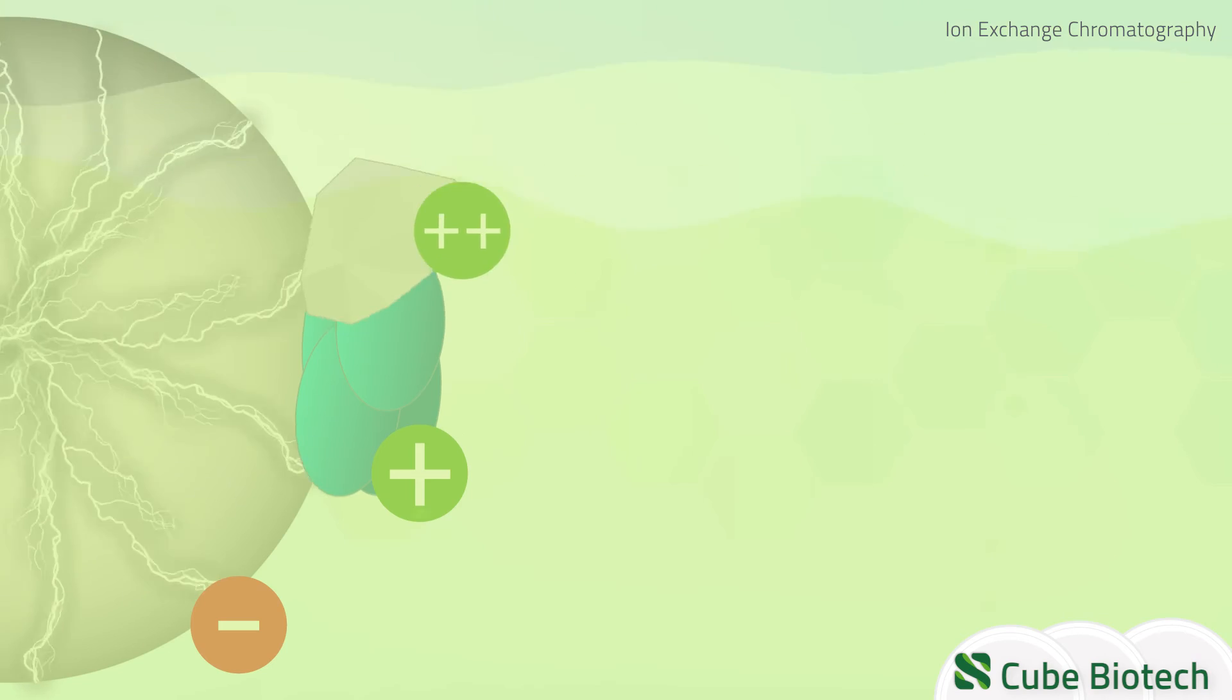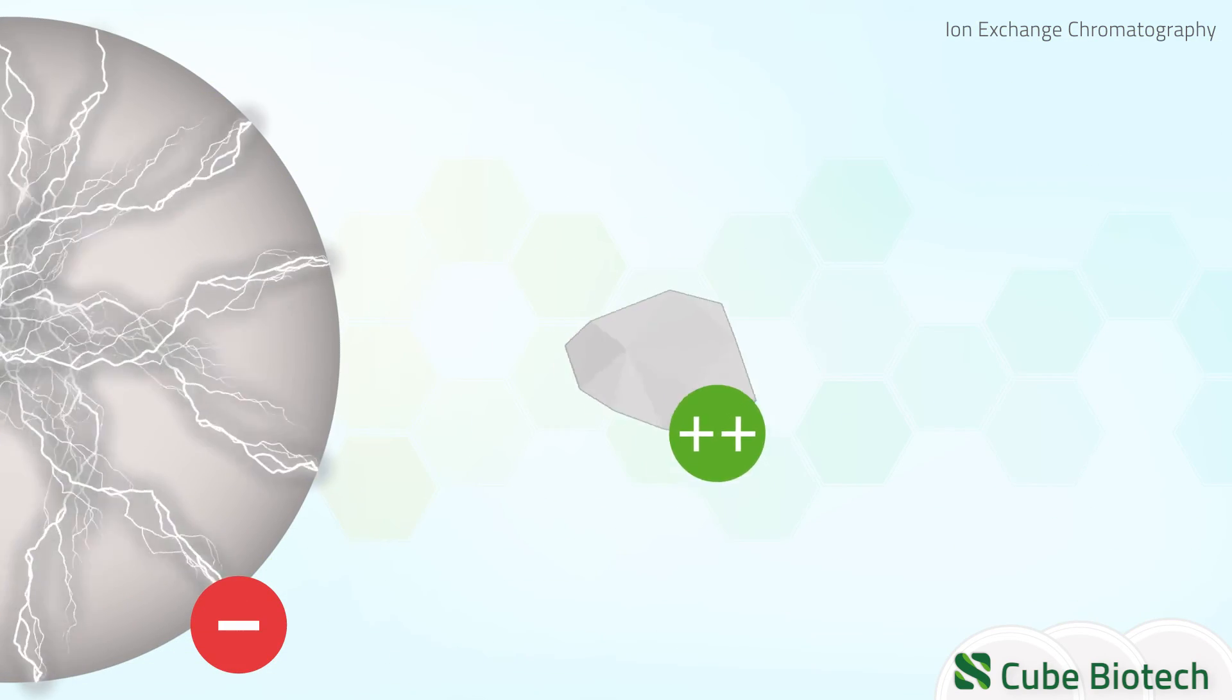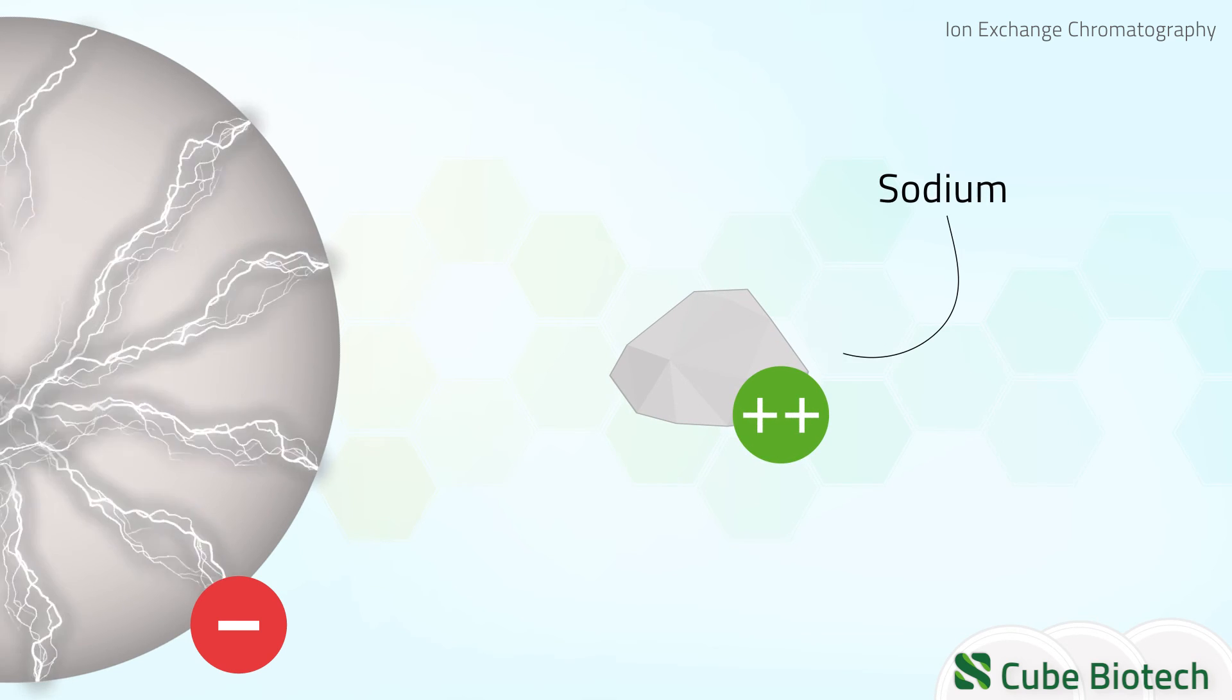For example, to elute the target protein from a cation-exchange chromatography column, a high concentration of sodium ions can be used.